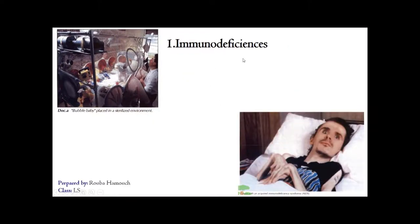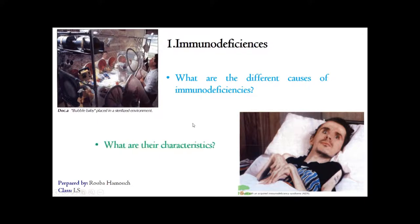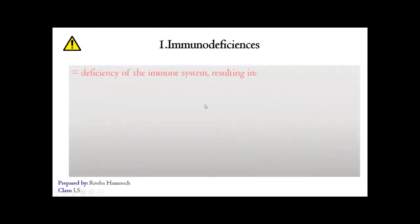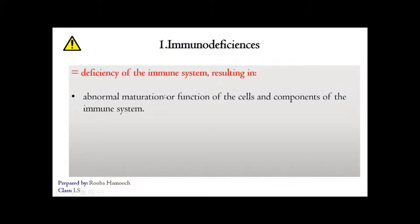For immunodeficiency, the problems to be solved are: what are the different causes of immunodeficiency, and what are their characteristics? By definition, immunodeficiency is a deficiency of the immune system that results in an abnormal maturation or function of the cells and components of the immune system.